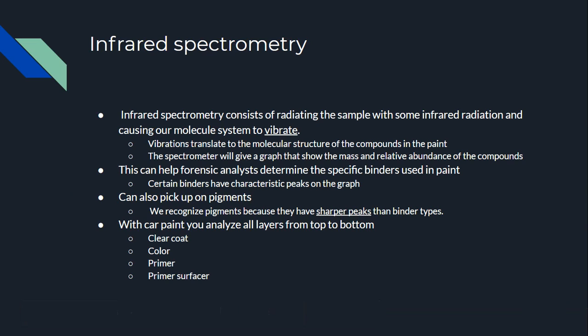When we chemically analyze paint, infrared spectrometry is the go-to method. You radiate the sample with infrared radiation, which causes the molecules to vibrate. Those vibrations translate to the molecular structure of the compound in the paint, and the spectrometer can graph that to show the mass and relative abundance of the compounds. This can also help analysts determine specific binders in the paint, because certain binders have very characteristic peaks on an IR graph.